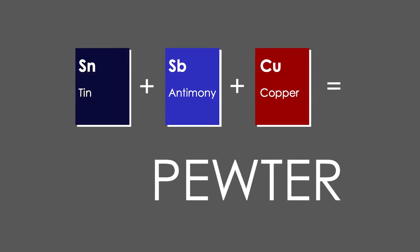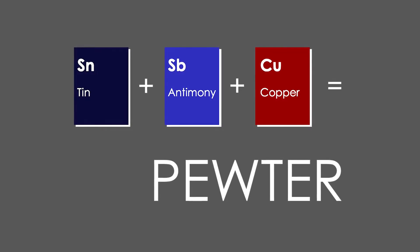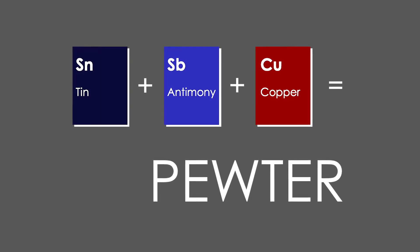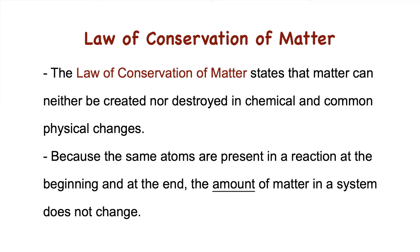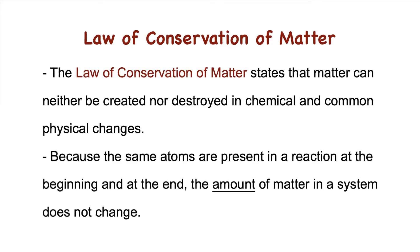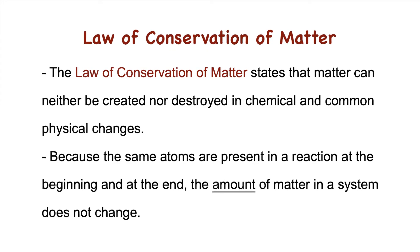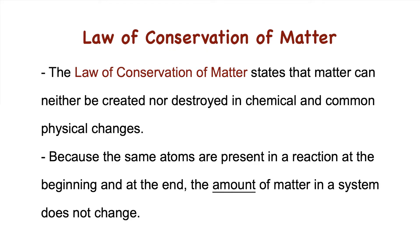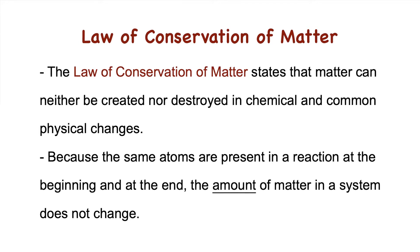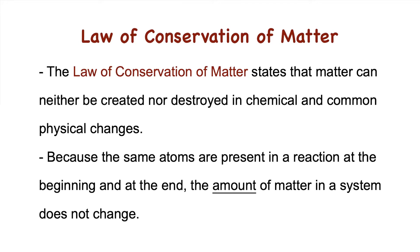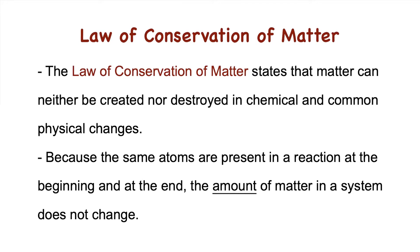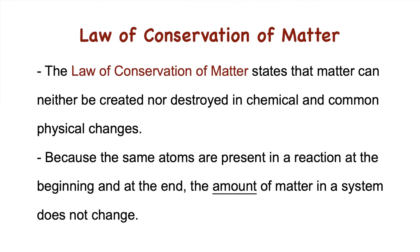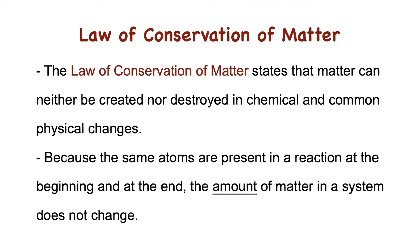As we look at the three elements that comprise our pewter, let's first look at the law of conservation of matter. This law states that matter can neither be created nor destroyed, and that the mass of one element at the beginning of its reaction will be equal to the mass of the element at the end of its reaction.